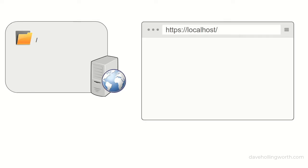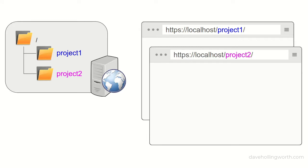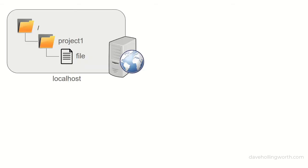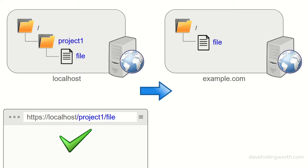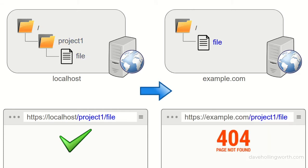When developing websites and web applications, it's typical to use a web server installed on your computer, accessing the site using the localhost web address. One way to separate different projects is to use a separate subfolder for each one, and append the name of this subfolder to the localhost URL when accessing the site in a browser. This can cause problems, however, when you move your site to a different server, as a URL that works on your local server won't work on the other server if that server doesn't use the same subfolder.